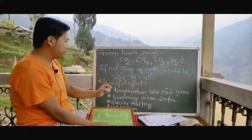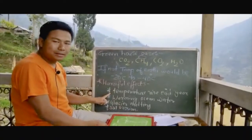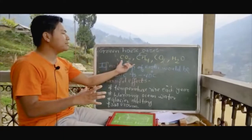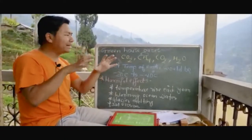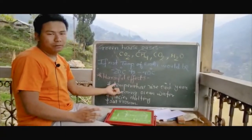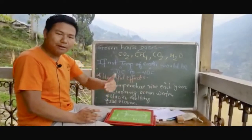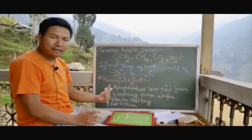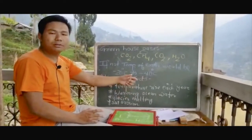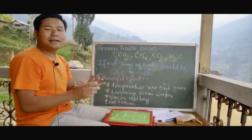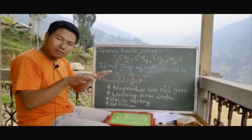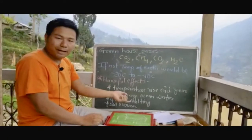Everything in excess is not good. When there is an excess of greenhouse gases, temperatures rise beyond normal levels. Not only that, glaciers are melting, and when glaciers melt, sea levels increase. Cities and countries near the seas will eventually submerge. These are the harmful effects we see because of excess greenhouse effect.